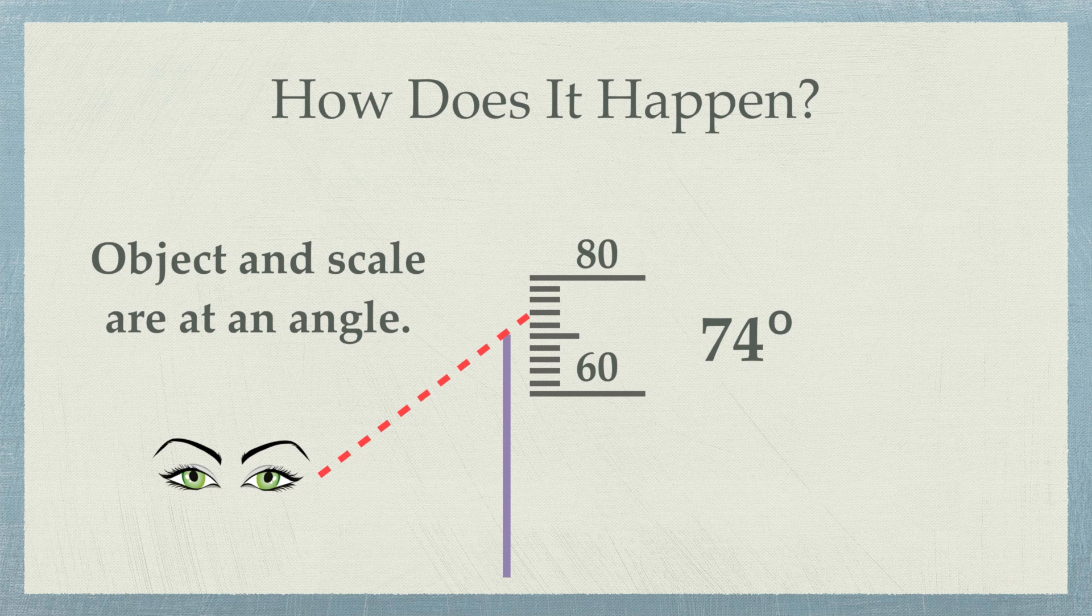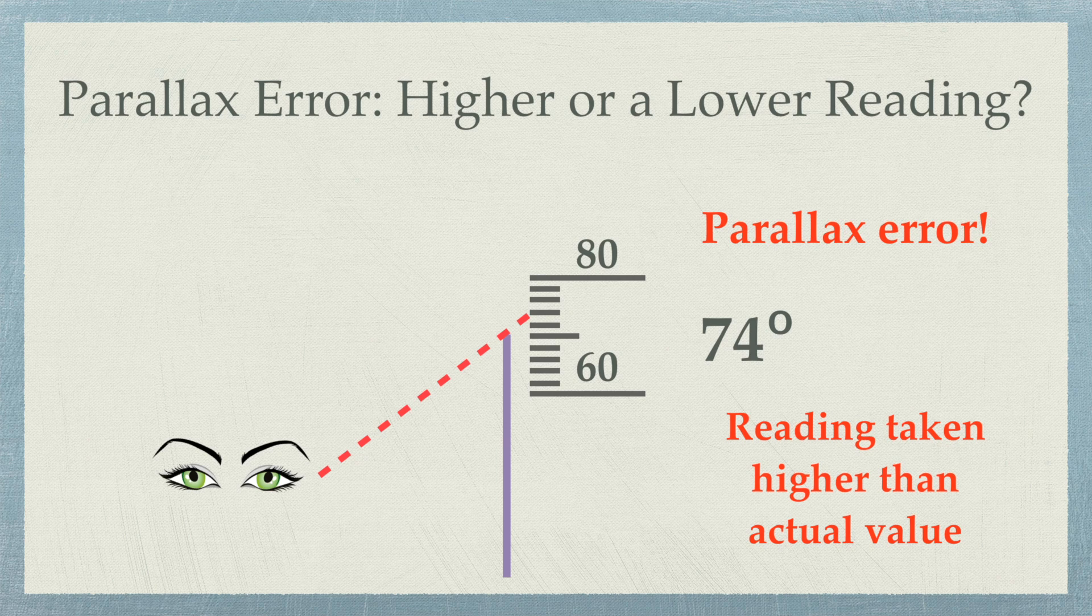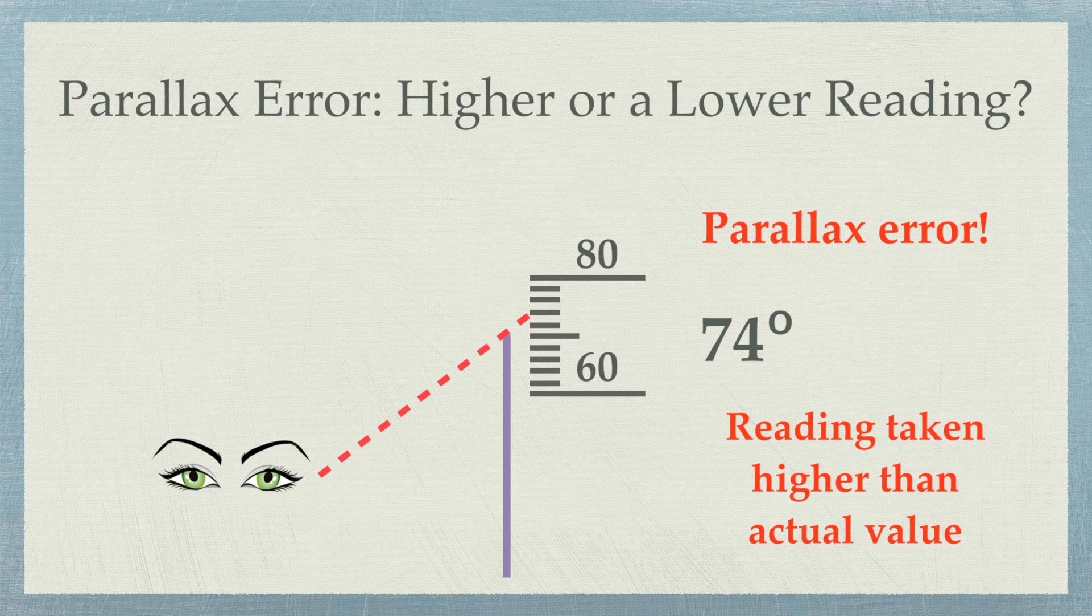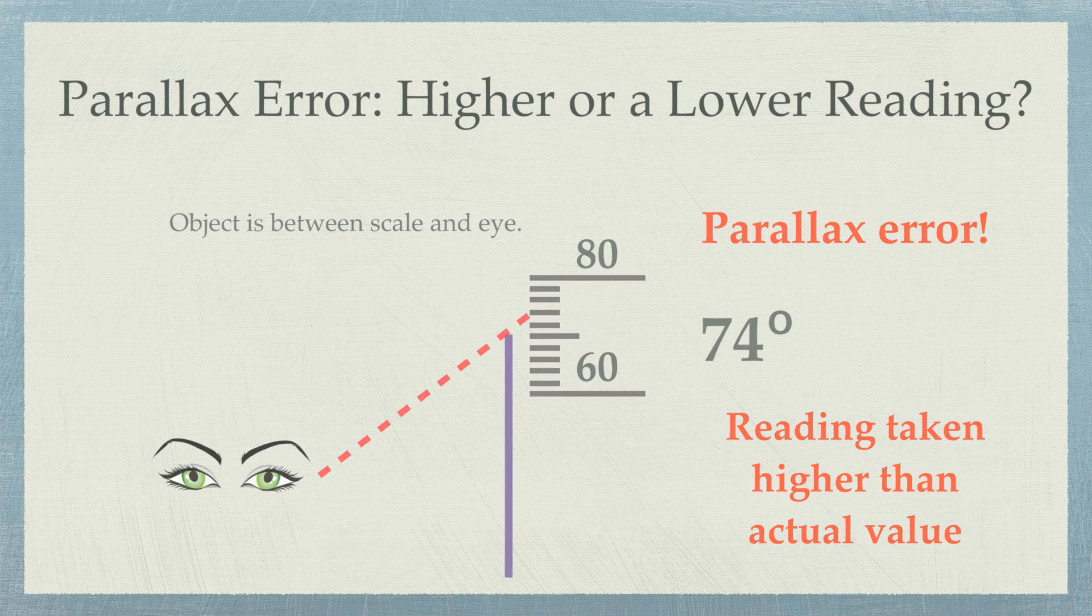So, does looking from below necessarily result in getting a higher reading than the actual value? Well, not necessarily. In this setup, the object being measured is between the eye and the scale. But what happens if the scale is now between the object and the eye?